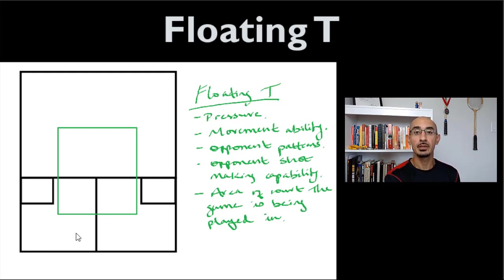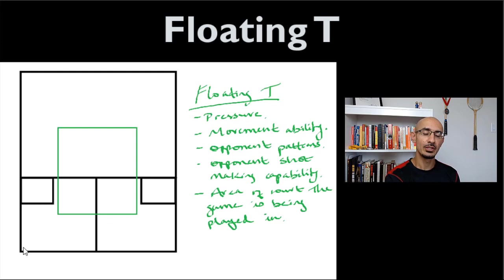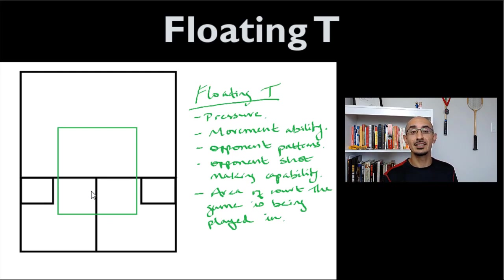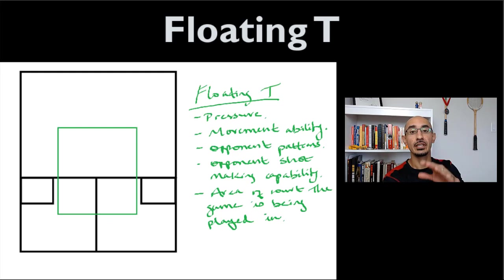The pressure that you or your opponent are under will determine your T position. How well you move will determine your T position. The patterns and capabilities of your opponent — do they have one option from the back left or four options? If you've hit a phenomenal length that's dying and the only shot your opponent has is a boast, you'll start cheating toward the front right. But you don't start there before they've hit the ball — you gradually gravitate forward when you get visual confirmation they're going to boast.